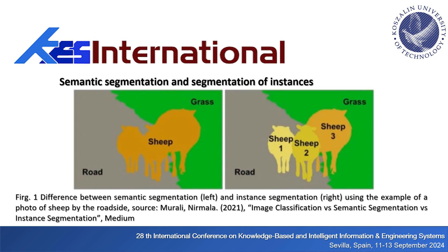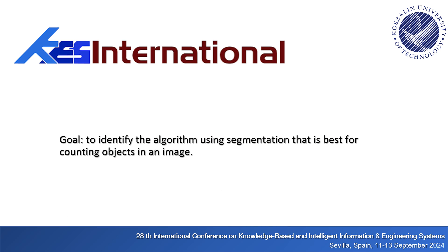Semantic segmentation involves assigning each pixel to a class based on the type of object visible in the image. An example would be to mark objects such as road, grass, and sheep shown in the visible image, or to make a distinction between foreground and background. We have many examples where image segmentation can be used. In this work, we chose a case to find the best algorithms in terms of correctness and accuracy of the results — specifically, locating and counting objects in an image.